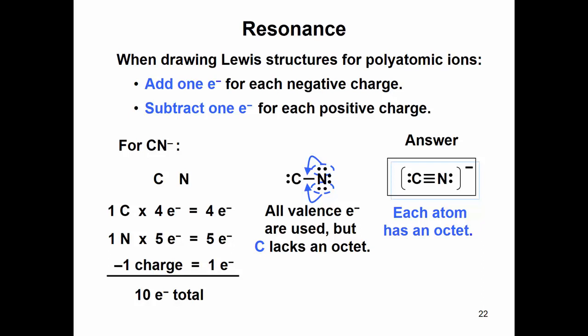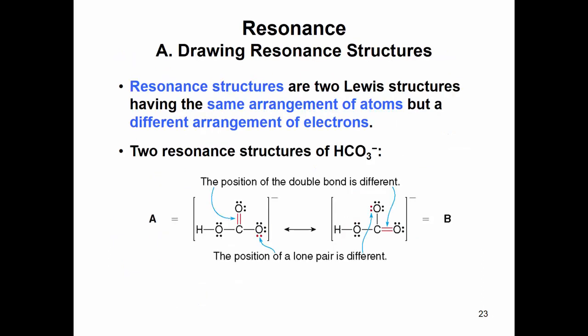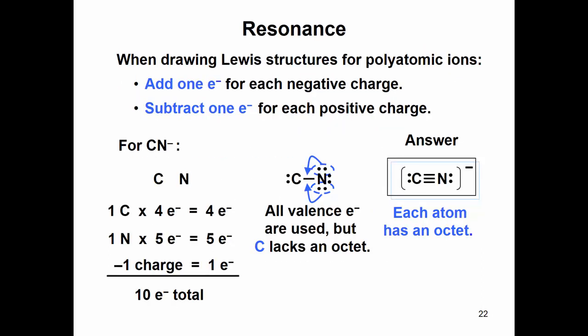But if we place, so we have our carbon and nitrogen. Those are the only two atoms that we have, and it has a negative charge, so we need to put that in brackets there.